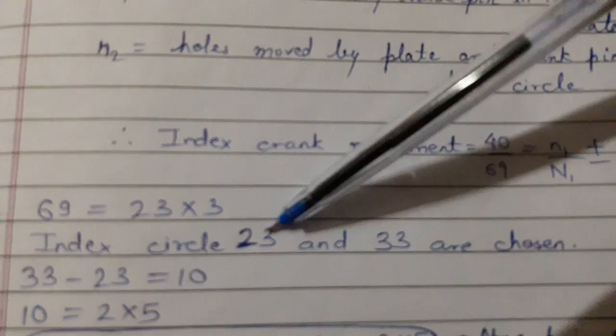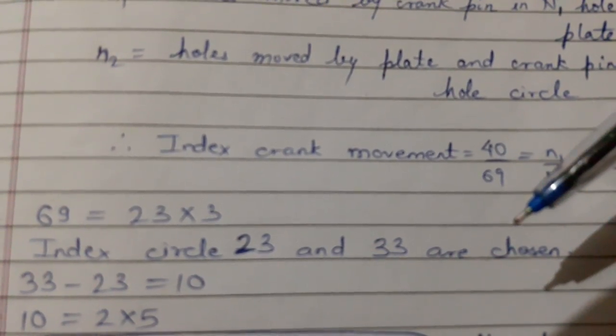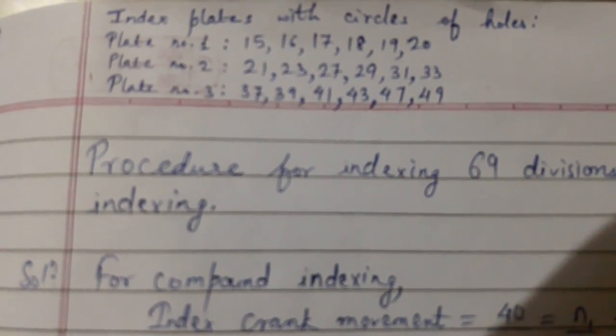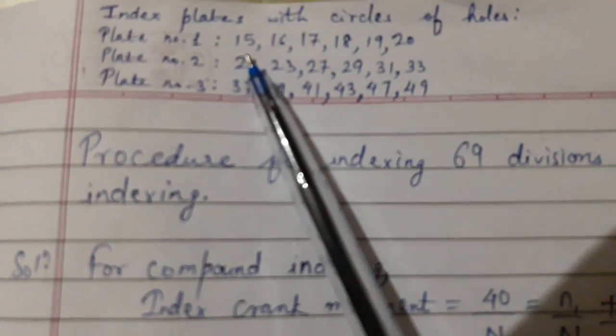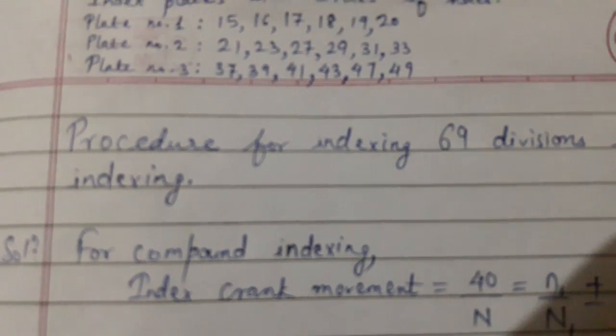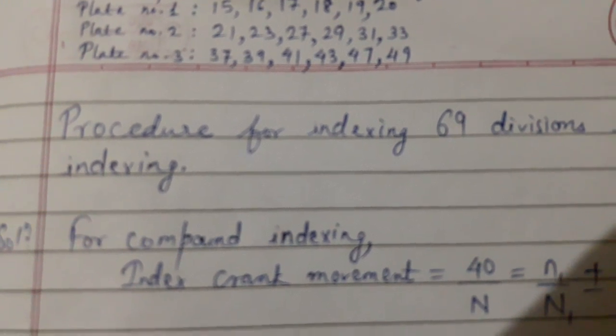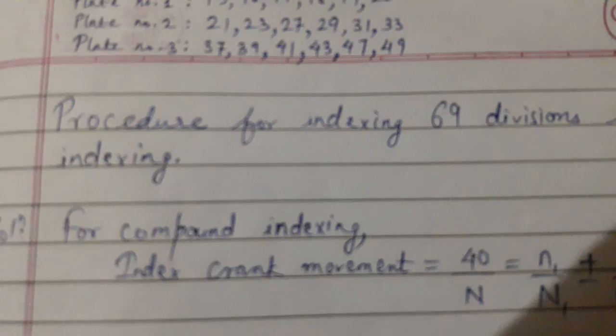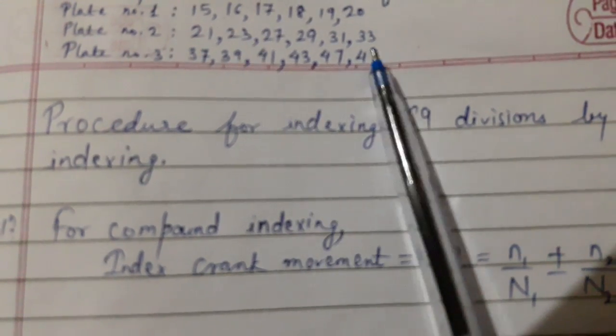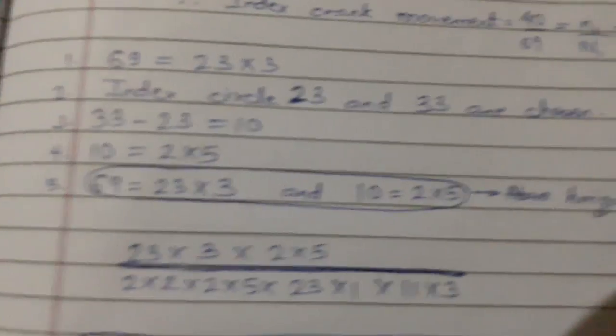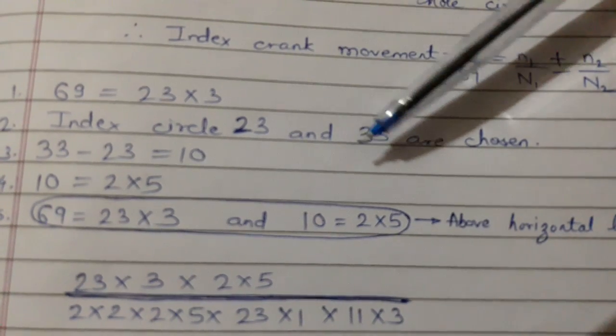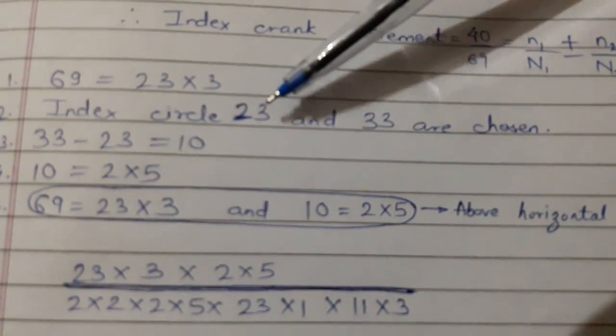What you can do is just take another circle which is at a gap of 10, which is 33. This has to be decided based on the standard plates which are available. If you see plate 1: 15, 16, 17, 18, 19, 20; plate 2: 21, 23, 27, 29, 31, 33. So what I have done in the problem, I got 23 circle so I chose 33 with a gap of 10. So this plate number 2 is having circle 23 and 33.